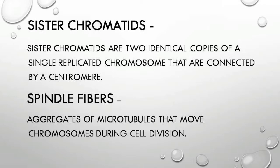Sister chromatids: two identical copies of a single replicated chromosome that are connected by a centromere. Spindle fibers: aggregates of microtubules that move chromosomes during cell division.